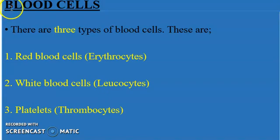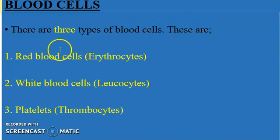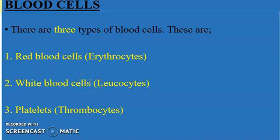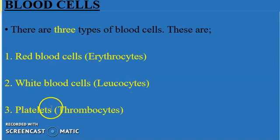Now let's look at the solid parts of the human blood. There are three main types of blood cells. These are: one, the red blood cells, also commonly known as the RBCs or erythrocytes; two, the white blood cells, commonly known as the WBCs or leukocytes; and three, the platelets, also known as thrombocytes.